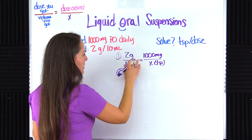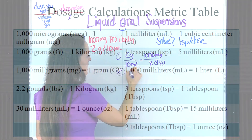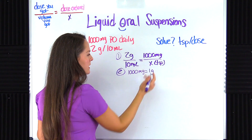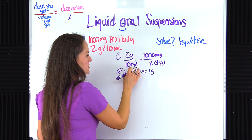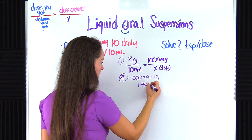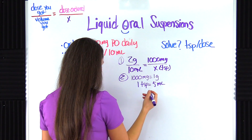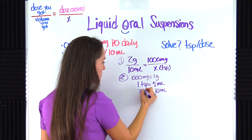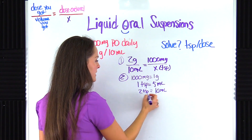Let's convert. From the metric table, 1,000 milligrams equals one gram — so the ordered dose becomes one gram. Now I need to convert the volume into teaspoons, since that's where our answer needs to be. From the metric table, one teaspoon equals five milliliters. So if we have 10 milliliters, that gives us two teaspoons. So two teaspoons goes into our volume slot.